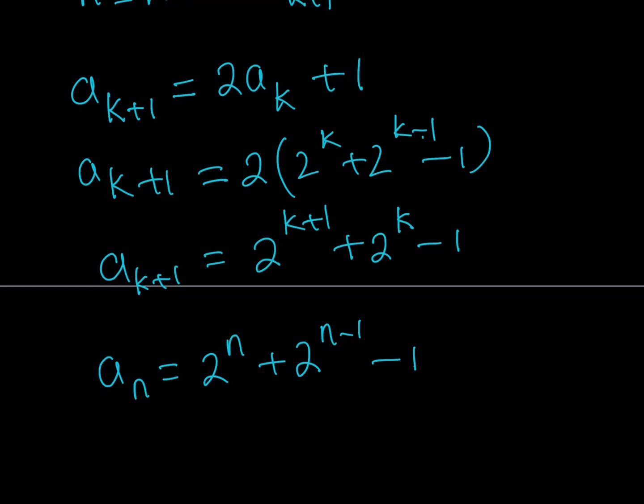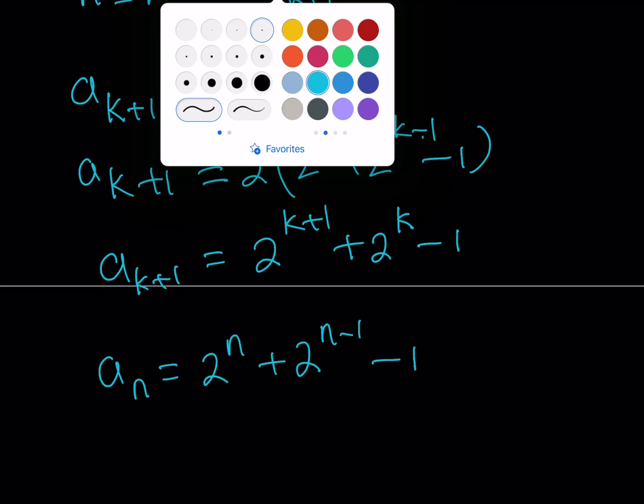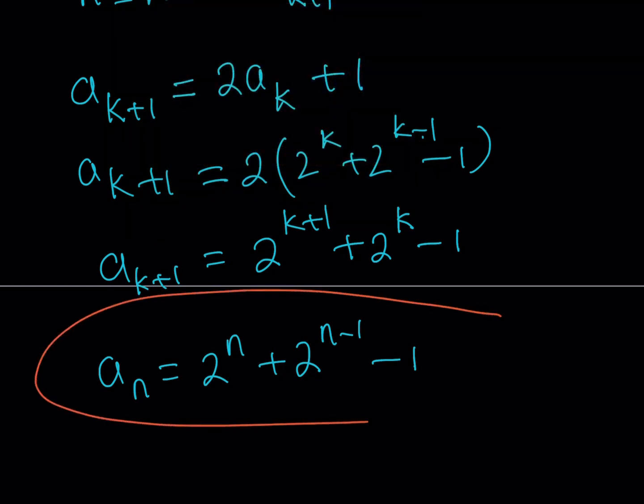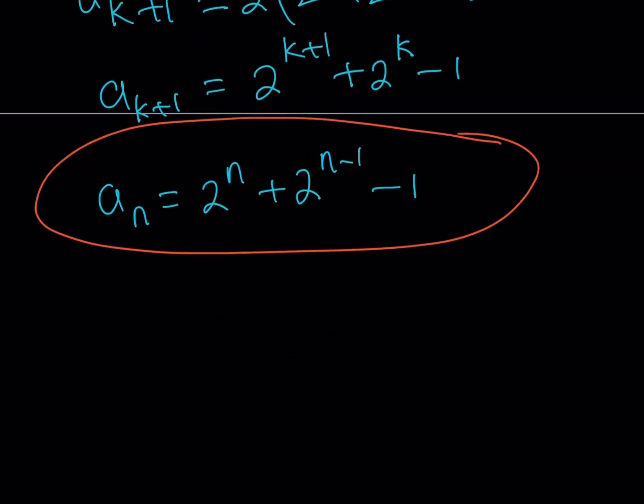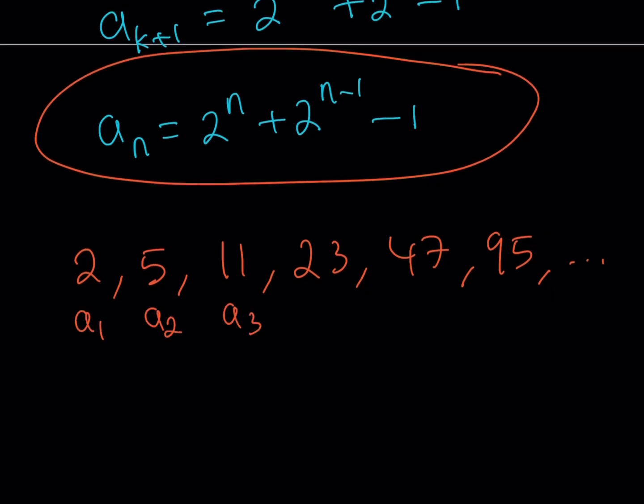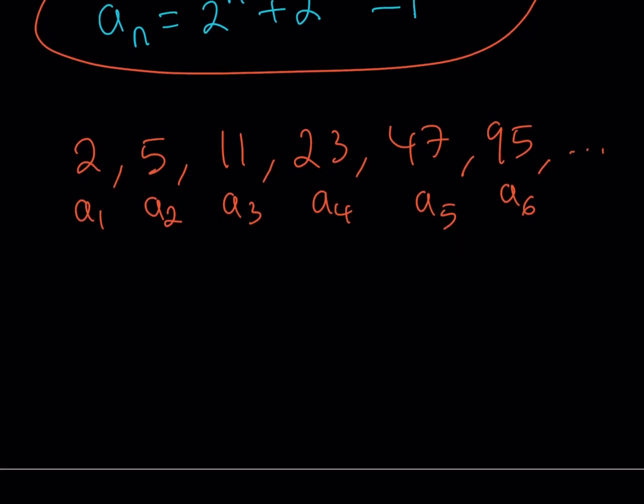But now let's talk about the second chapter of this video, and that's going to be about how to come up with this formula, because I didn't just come out of the blue. There's a way to come up with this answer. We're going to list these terms again. The first term was 2, double and add 1 gives 5. Double and add 1 gives 11, then you get 23, and then 47, and then 95. This is A1, this is A2, this is A3, this is A4, this is A5, and this is A6.